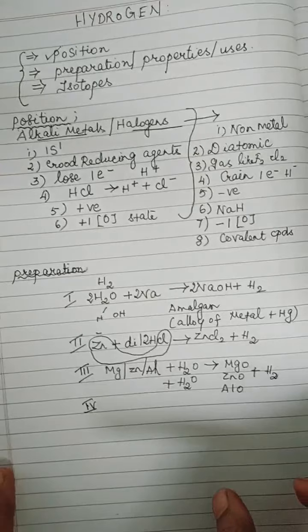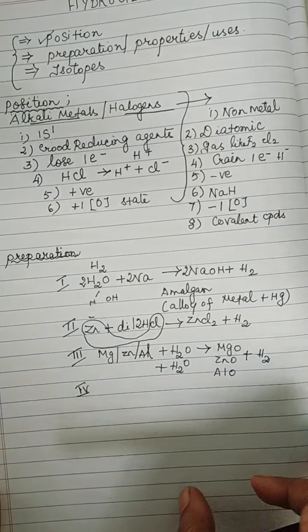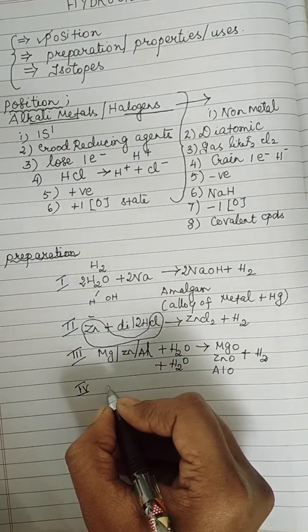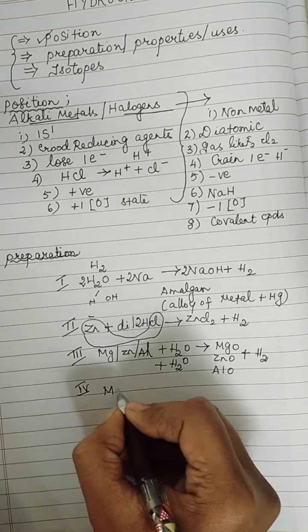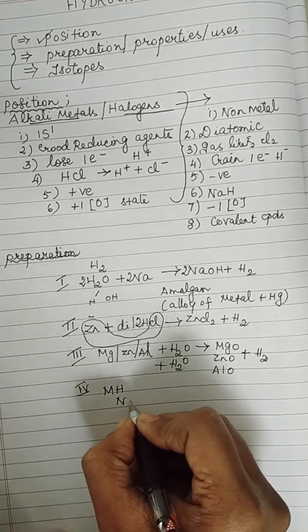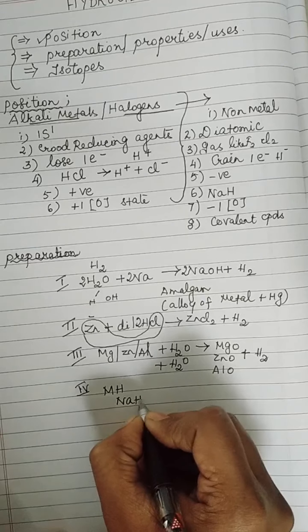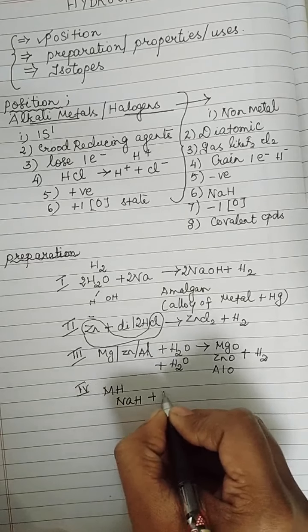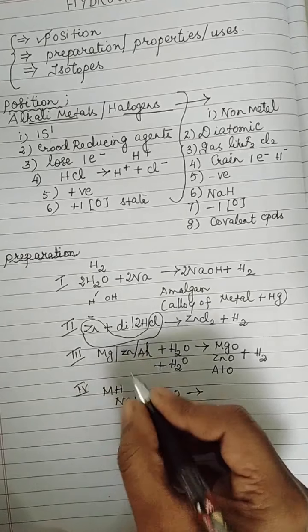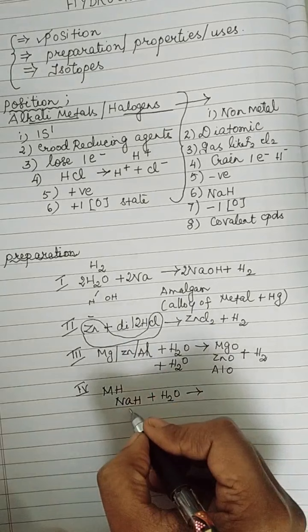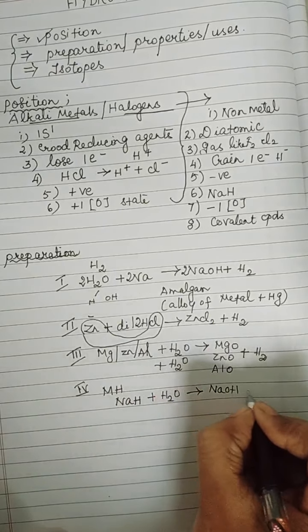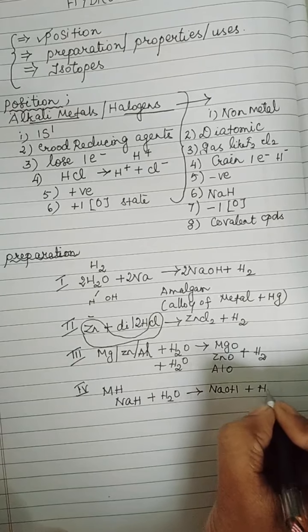The fourth step involves treating water with a metal hydride. A metal combined with hydrogen is a metal hydride. Specifically, sodium hydride (NaH) is treated with water: NaH + H₂O → NaOH + H₂. Sodium hydroxide is liberated along with hydrogen.